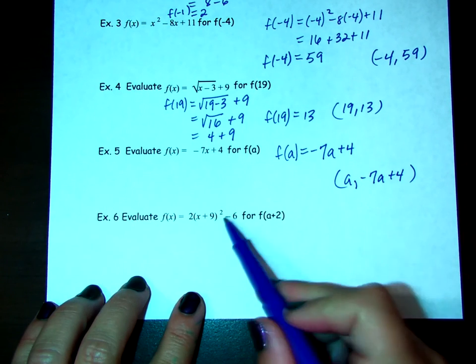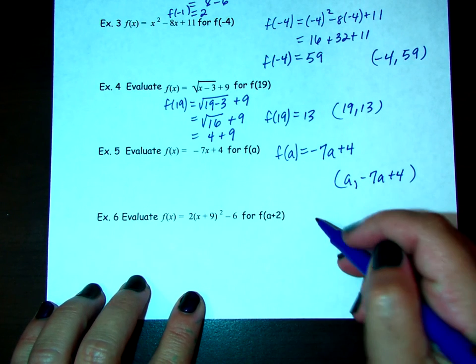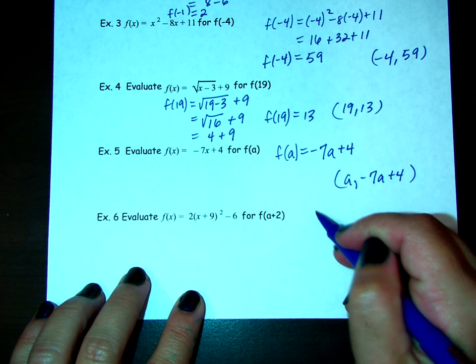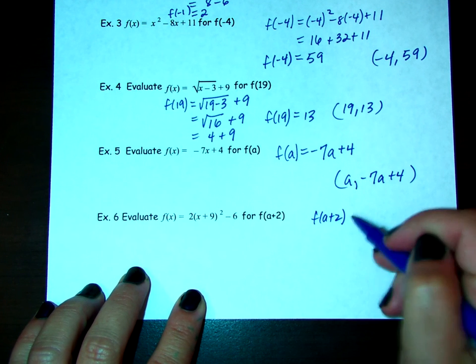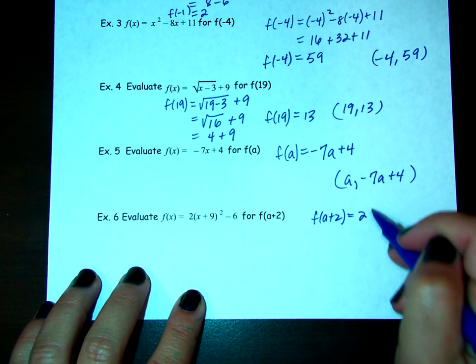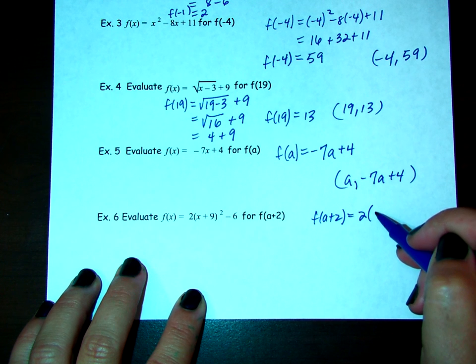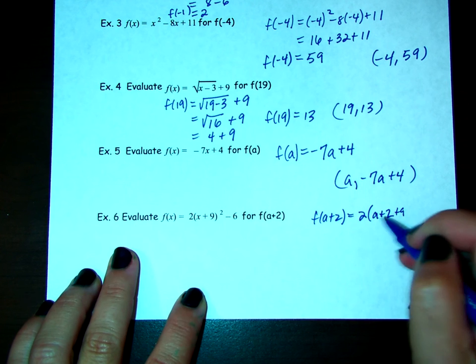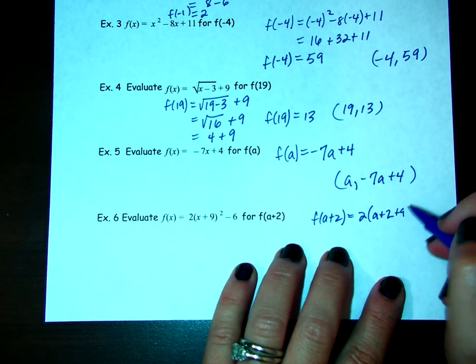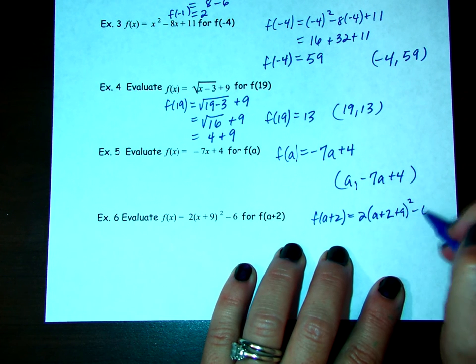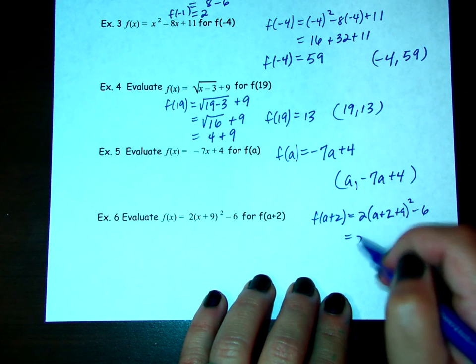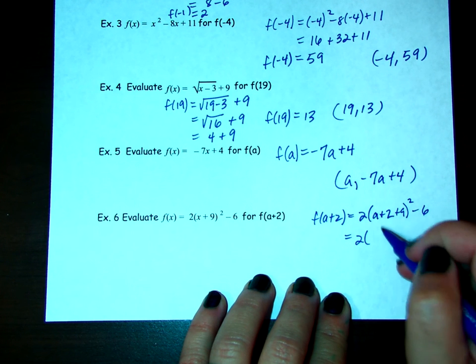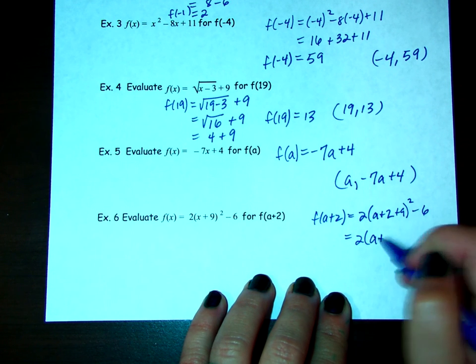Let's look at the next one which happens to be a quadratic in vertex form. Now, we're going to go f(a+2), and everywhere that there's an x, we're going to plug in an a+2. So it becomes (a+2+9)² - 6. So inside this parentheses first, using PEMDAS, it's now going to become (a+11)².